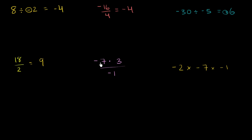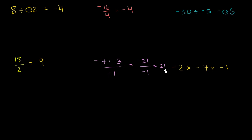So this says negative 7 times 3 in the numerator, and then we take that product and divide it by negative 1. Negative 7 times 3: positive 7 times 3 would be 21, but since exactly one of these two is negative, this is going to be negative 21. So it's negative 21 over negative 1. Negative 21 divided by negative 1 — a negative divided by a negative is going to be a positive — so this is just going to be positive 21.